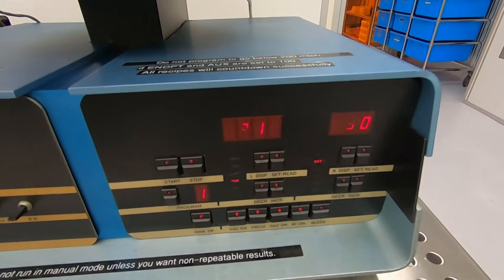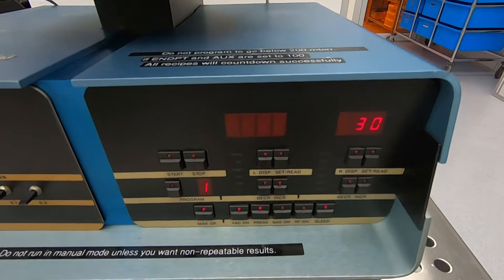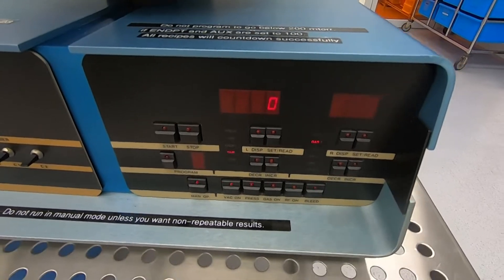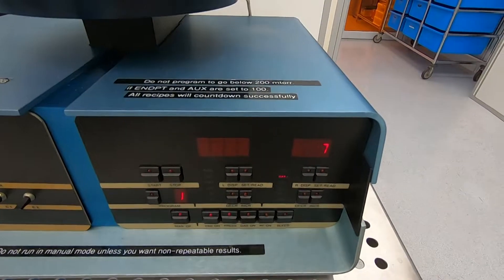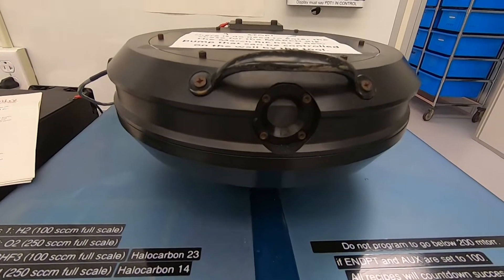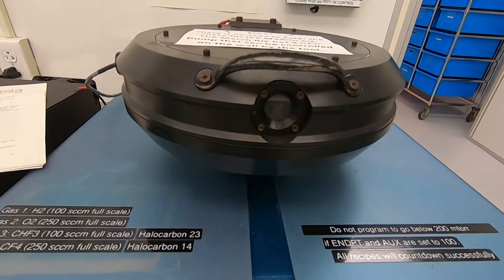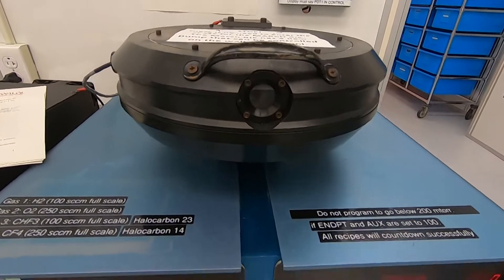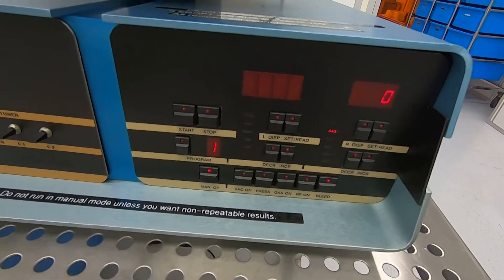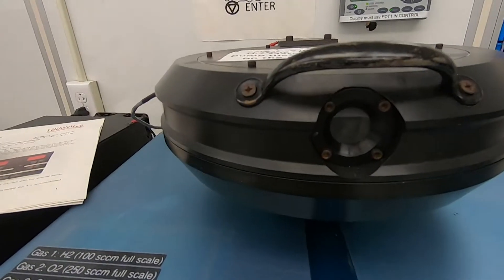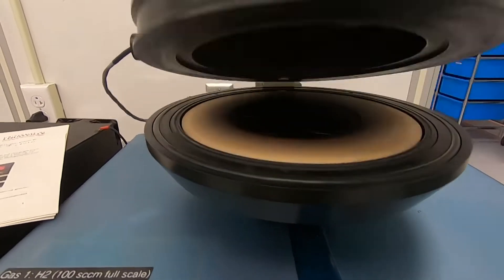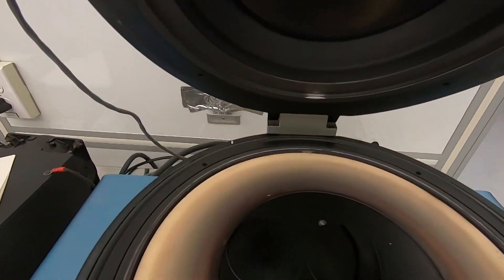Anyway, okay. So bleed shuts everything off, purges the chamber, brings it to atmosphere. Let's see what we've got. All right. So it should be coming up. And we're good, and they look pretty clean.